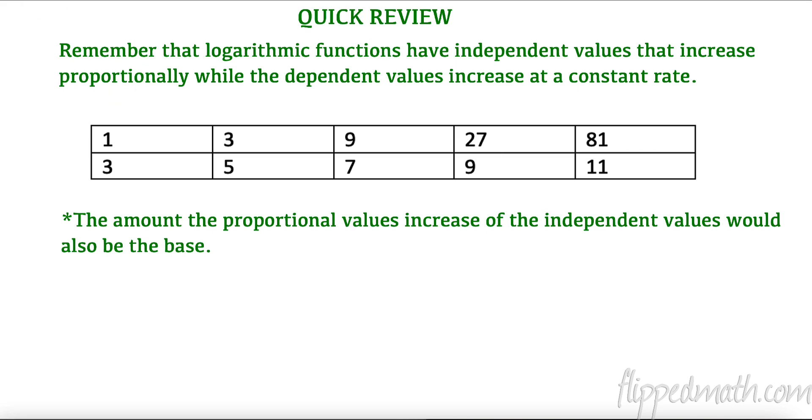Let's remember that logarithmic functions have independent values that increase proportionally and dependent values that increase at a constant rate. Here is a constant rate, increasing by two every time. This is increasing at a proportion of three, multiplying by a factor of three. And the great thing about this is this proportional right here would be our base if we were to find the equation of this line.